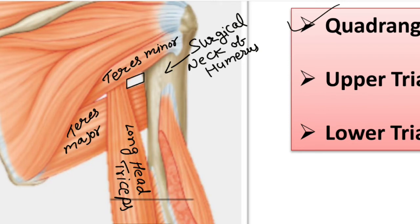What are the boundaries of the quadrangular space? Superiorly, this quadrangular space is bounded by the inferior border of the teres minor muscle. In front of the teres minor muscle there is also the subscapularis muscle and the capsule of the shoulder joint, which form the superior boundary. The inferior boundary is formed by the superior border of the teres major muscle.